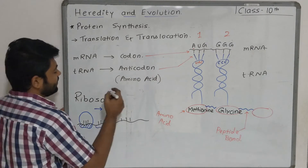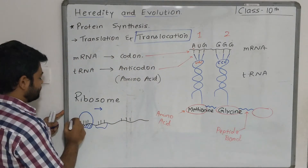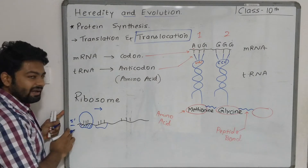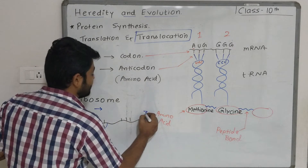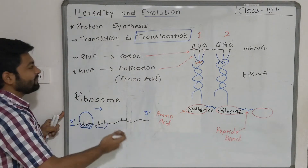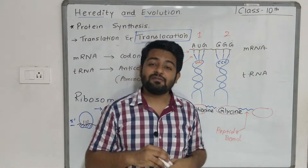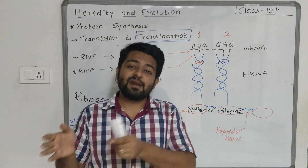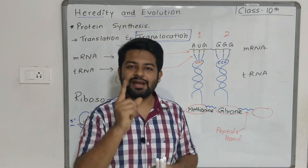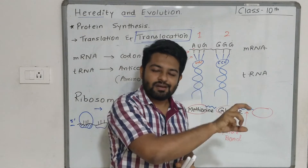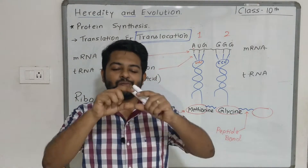The ribosome moves from the first codon to the second codon, then to the third codon. This movement of the ribosome is called translocation. The direction of movement is from the five prime end to the three prime end of the mRNA. Whenever the ribosome moves, each step covers three nucleotides — one codon. As it moves, amino acids keep getting added.